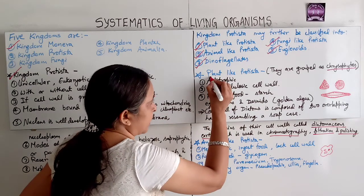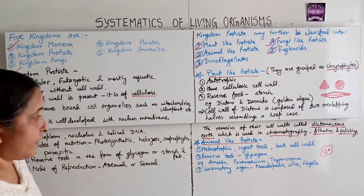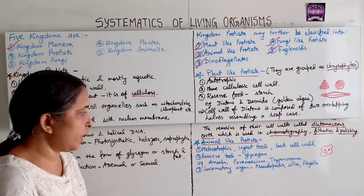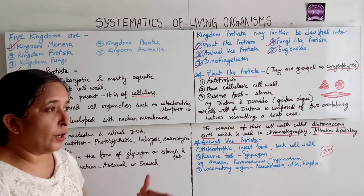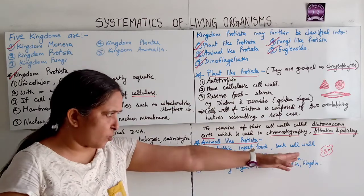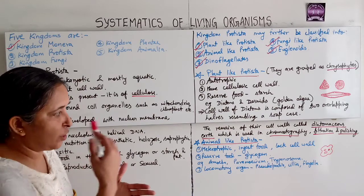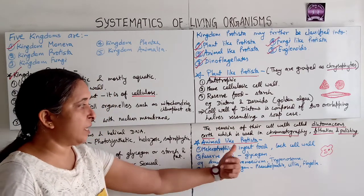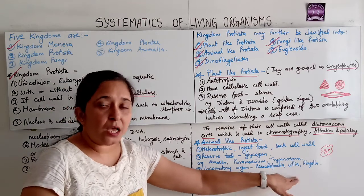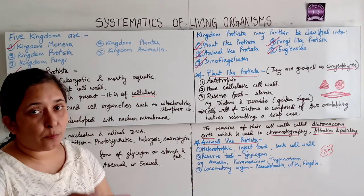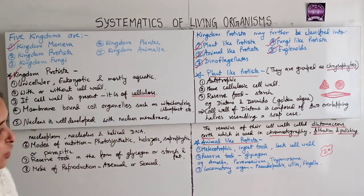The next is animal-like Protista. They are heterotrophic, ingest food, and lack a cell wall. Reserve food is in the form of glycogen. Examples are Amoeba, Paramecium, and Trypanosoma. The locomotory organs are pseudopodia (Amoeba), cilia surrounding the body (Paramecium), and flagella (Trypanosoma).